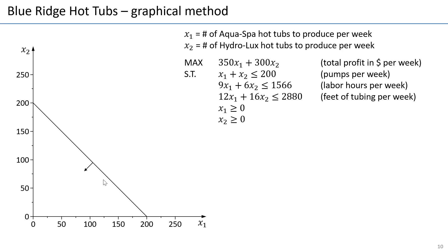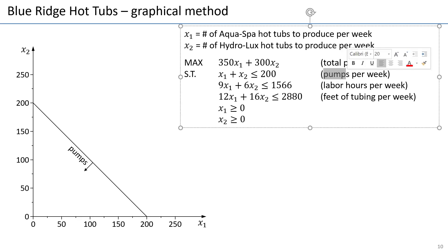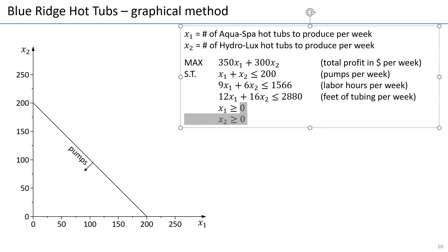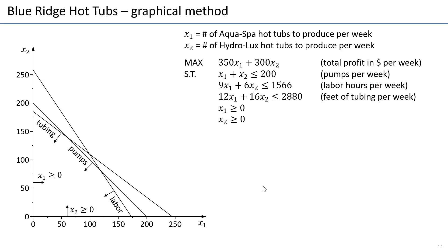So all the points in this triangle actually use 200 pumps or less. On the line, they use exactly 200. I'm going to put a label here that this is the pumps constraint, just to remember what this line represents. If you draw the other constraints, you'll find that they are similar lines — all of them look like this.